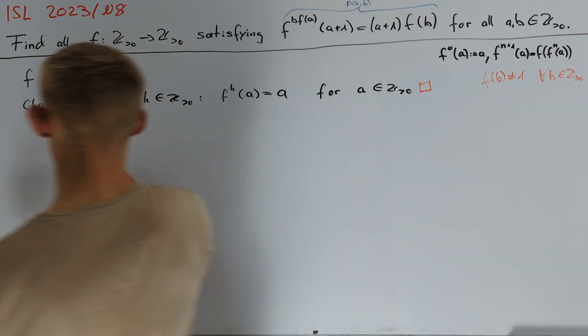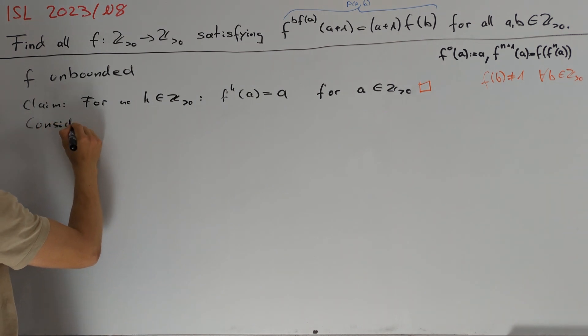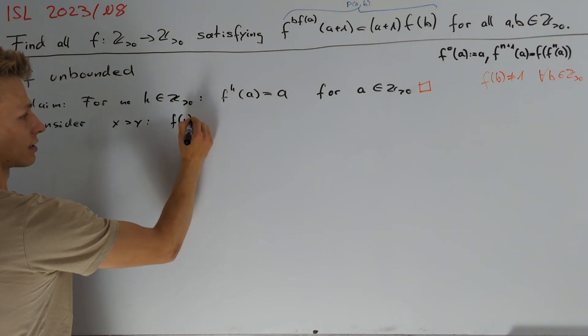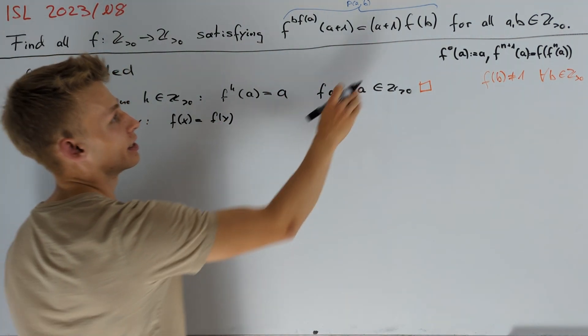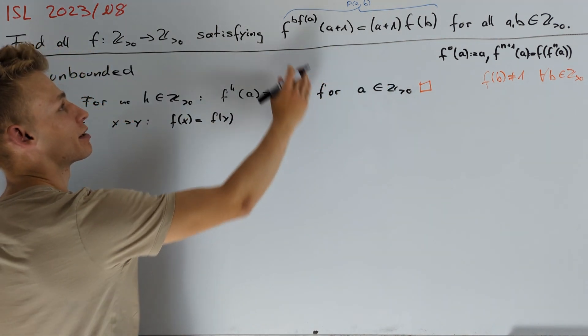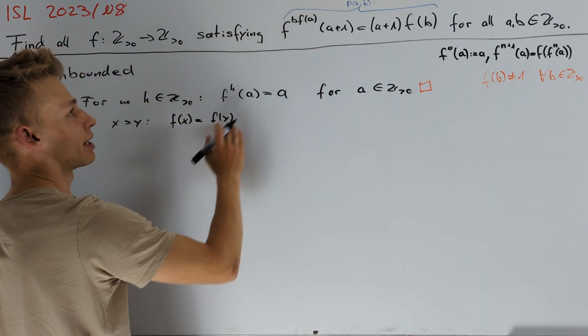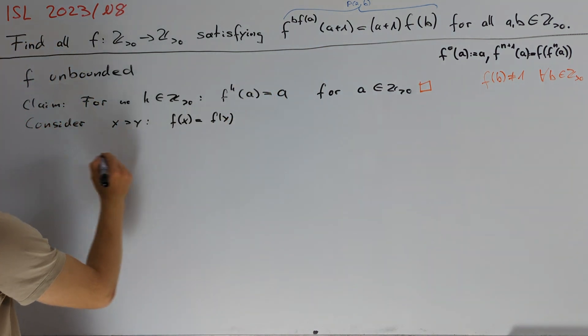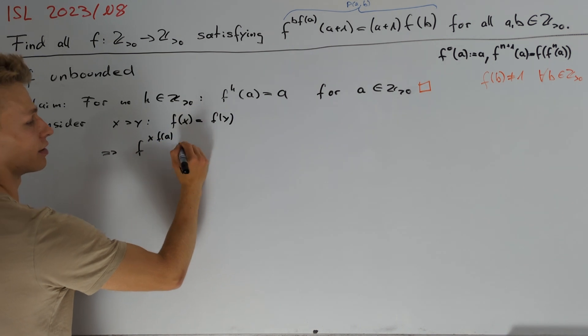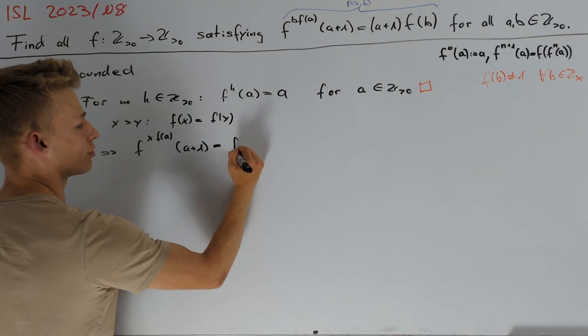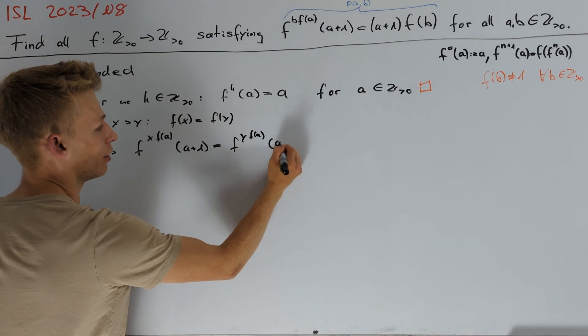For this, consider different positive integers x and y. So, for example, x > y such that f(x) = f(y). We want to take b equals to x and y into the functional equation because then the right hand side stays the same. Hence, by setting b equals to x and b equals to y on the left hand side, it should be the same. So, we get that f^(xf(a))(a+1) = f^(yf(a))(a+1).